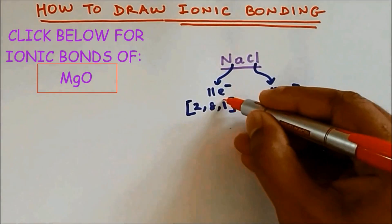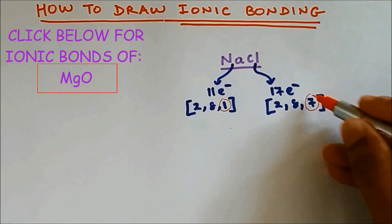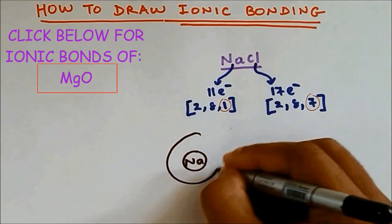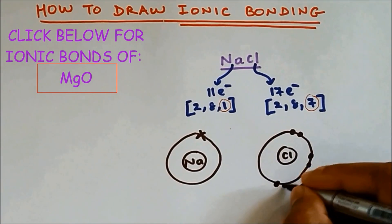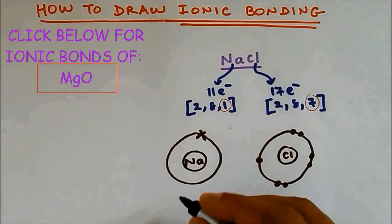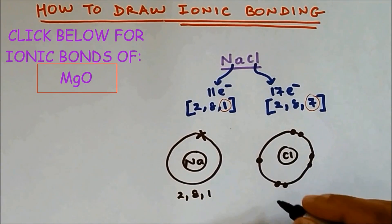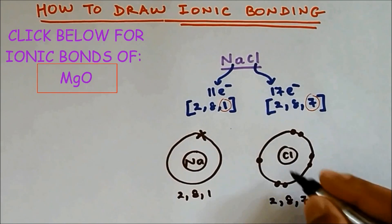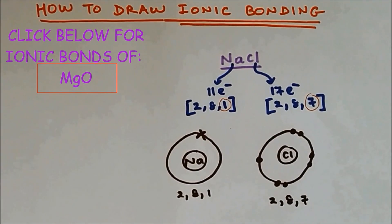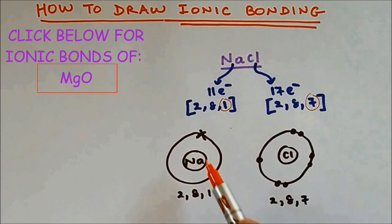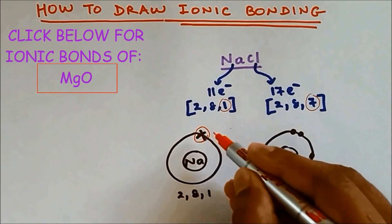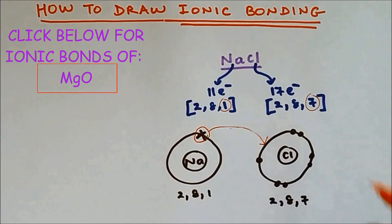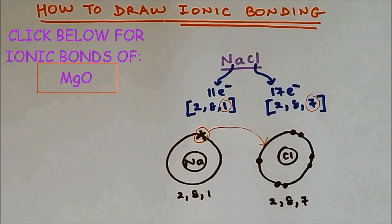To draw ionic bonding, the number of electrons in the outer shell are very important. Sodium has one electron in the outer shell and chlorine has seven electrons in the outer shell. For sodium, in order to have a full outer shell of electrons, the sodium is going to lose the one electron in the outer shell, and this electron is going to be transferred to the chlorine, because chlorine has seven electrons in the outer shell so it needs one more electron in order to have a full outer shell.